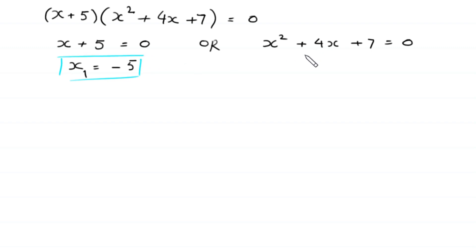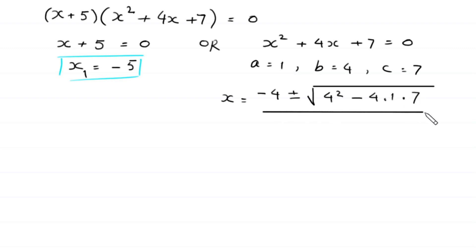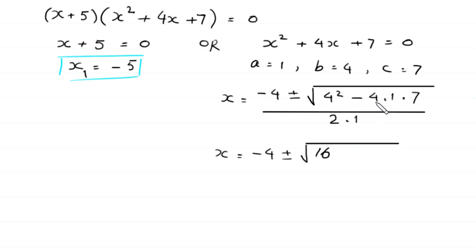To find the other two values, we solve the quadratic equation x² + 4x + 7 = 0. In this equation, a = 1, b = 4, and c = 7. According to the quadratic formula, x = [−b ± √(b² − 4ac)] / 2a = [−4 ± √(16 − 28)] / 2.